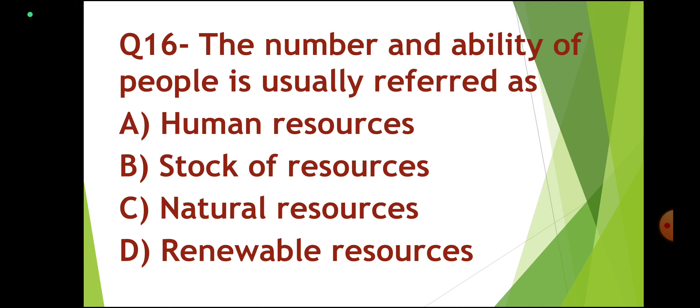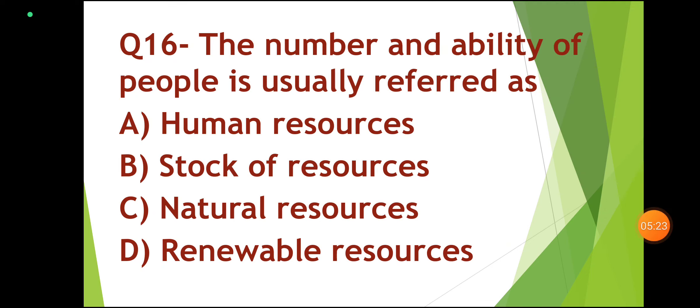Question number 16: The number and ability of people is usually referred to as — Human resource; Stock of resource; Natural resources; or Renewal resource. Correct answer: Human resource. Option A is correct.